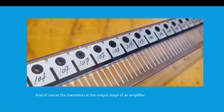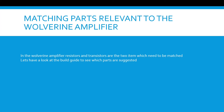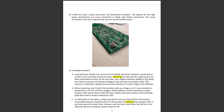Of course, the transistors in the output stage of an amplifier also benefit from matching. In the Wolverine amplifier, the build guide suggests matching the long tailed pair Q1 and Q2, and the current mirrors Q3 and Q4. These should be matched in performance as well as one can within practical means. Matching the VBE and HFE is desired but not often achievable by many.